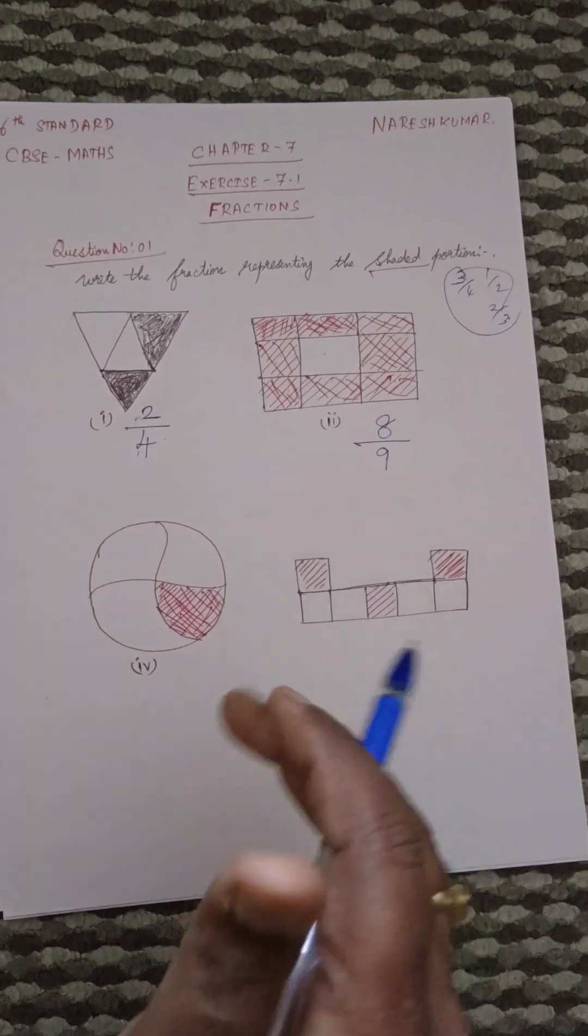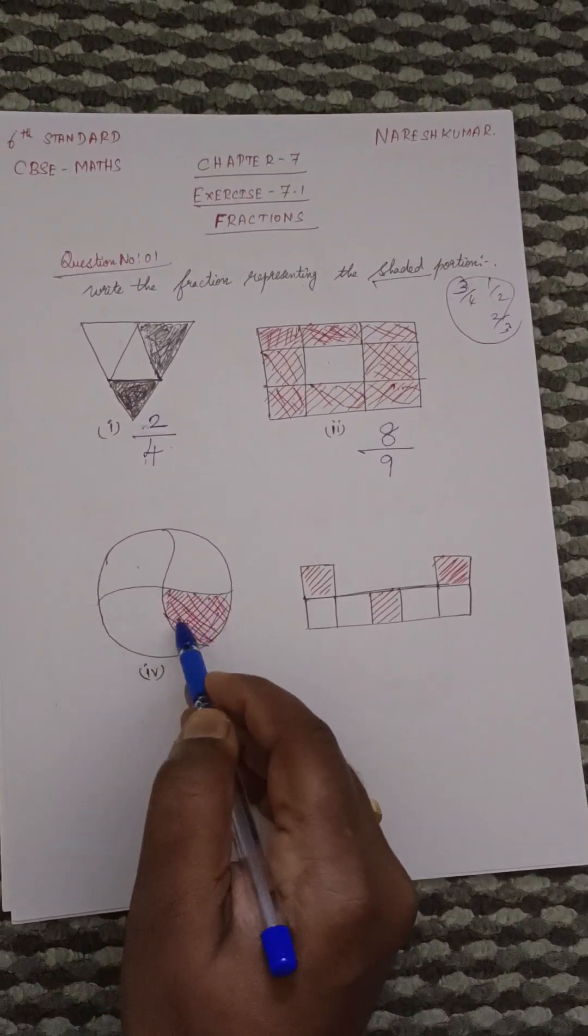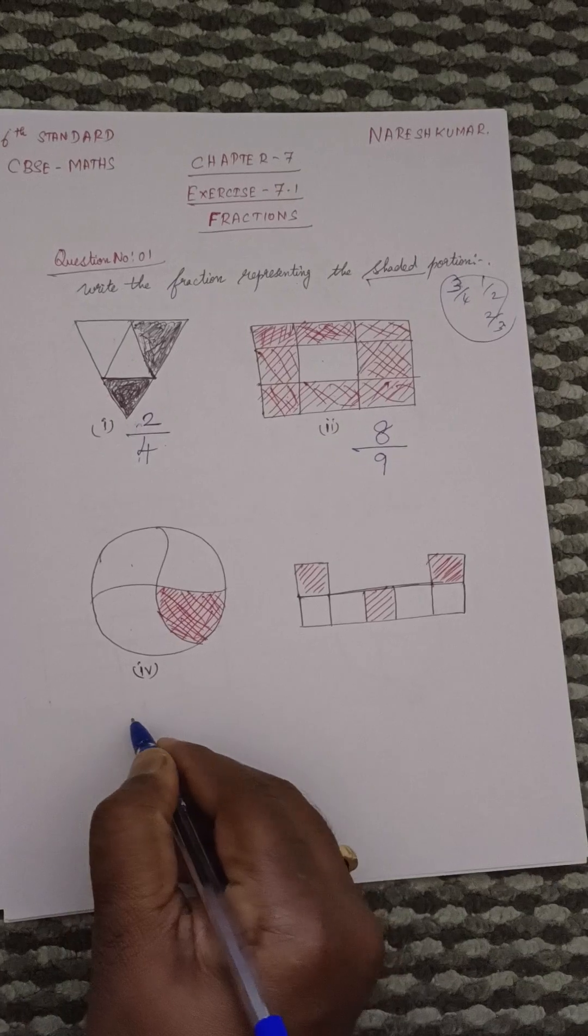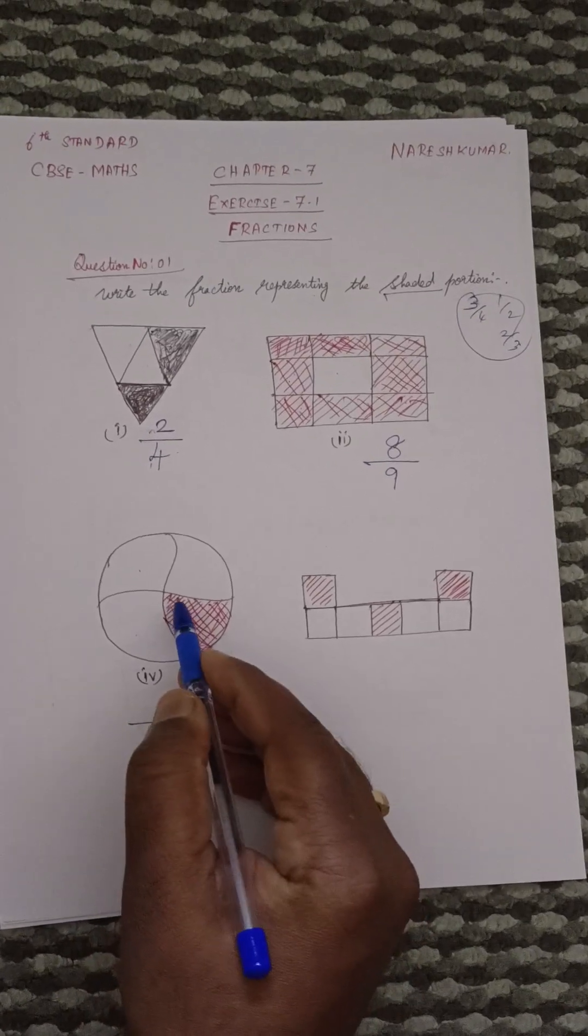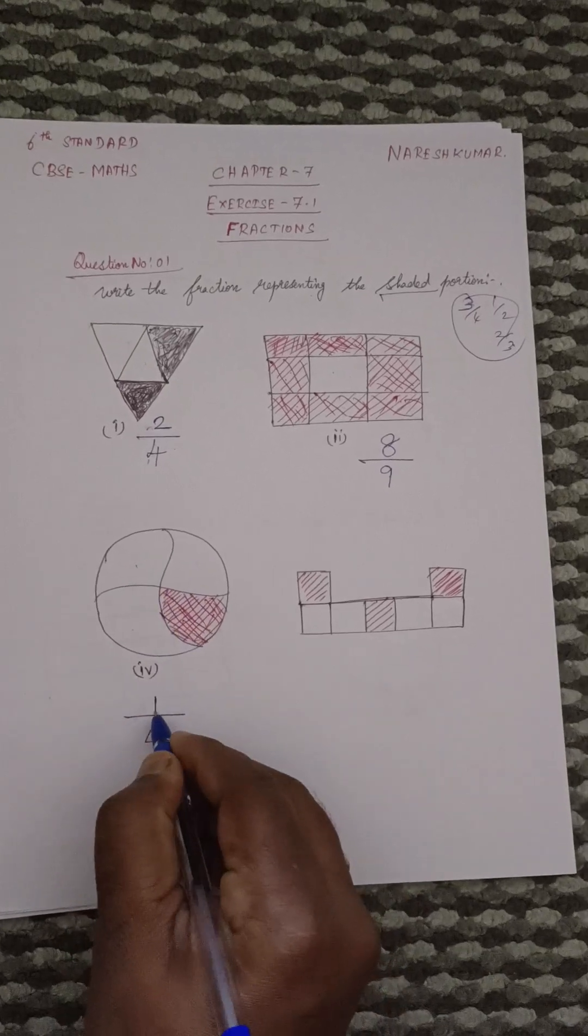The next one. Here, how many places has been divided? 1, 2, 3, 4. So write it as 4. Then shaded portion, how many are there? 1. So 1 by 4.